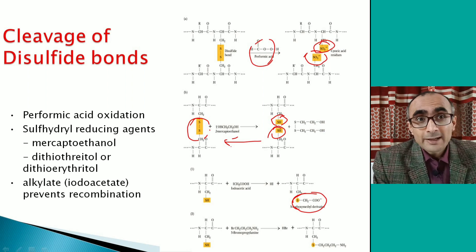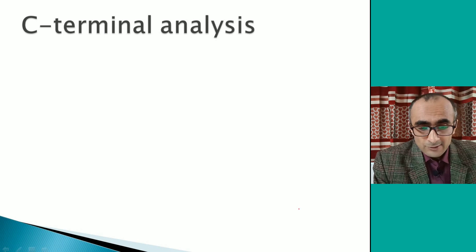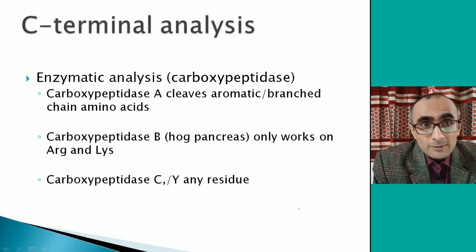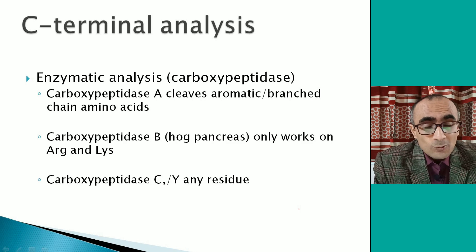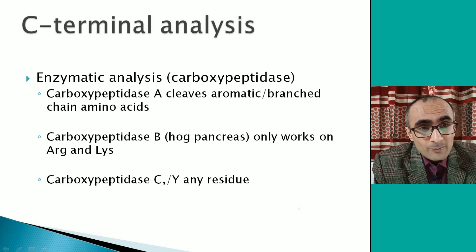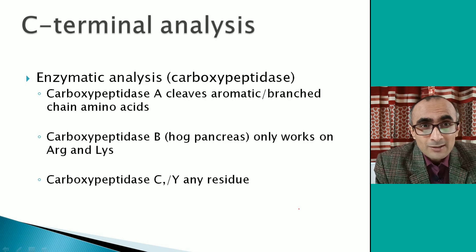Just as we have used chemicals to identify the N-terminal of a peptide or protein, the C-terminal can also be identified, and for that, enzymes are used. Enzymes that cleave peptides from the C-terminal side are called carboxypeptidases, which belong to the family of exopeptidases. These cleave from the terminal side, whereas pepsin, trypsin, and similar enzymes are endopeptidases, which cleave peptides in the middle of sequences.